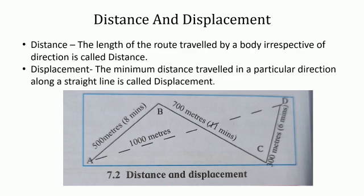Distance and Displacement. Let us study distance and displacement with the help of an activity. Ranjit's house is at place A. The figure shown on the screen shows the distance traversed by Ranjit to reach his school at D. Ranjit travelled to school without taking any direction into account, so the distance traversed by Ranjit is AB plus BC plus CD. Distance is the length of the route actually traversed by a moving body irrespective of direction. Distance is a scalar quantity.